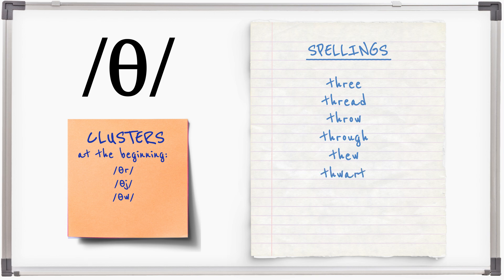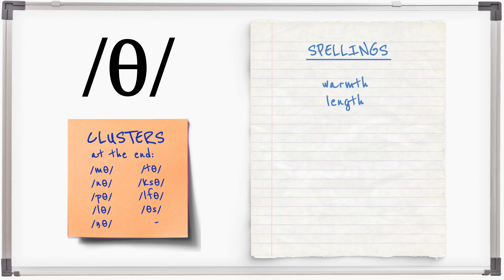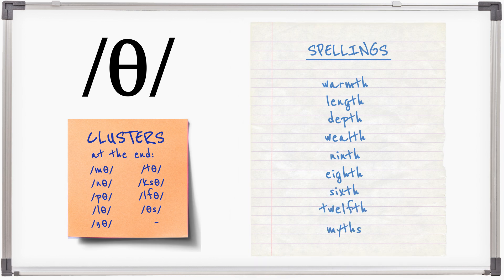TH also appears in many clusters at the end of words: warmth, length, depth, wealth, ninth, eighth, sixth, twelfth, myths.